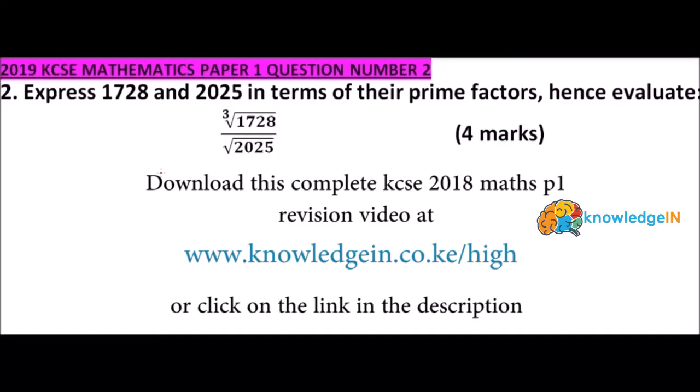2019 KCSE Mathematics Paper 1, question number 2. We are told express 1,728 and 2,025 in terms of their prime factors. Hence, evaluate the cube root of 1,728 divided by the square root of 2,025.